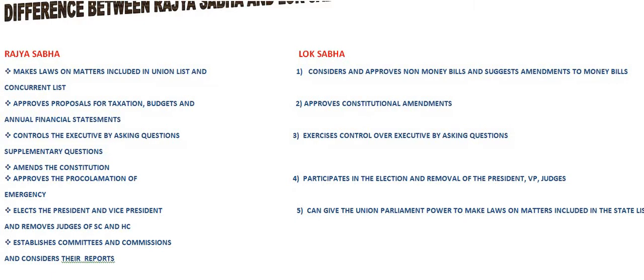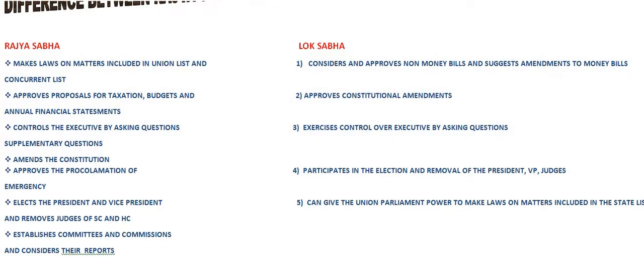Next, it approves proposals for taxation, budgets, and annual financial statements — approval basically. Lok Sabha approves constitutional amendments. So you can see all the work of both the houses. It is very important that we have two houses of the parliament. Next, it controls the executive by asking questions. Lok Sabha also does the same because this is part of the legislature — Lok Sabha also exercises control over the executive by asking various questions.